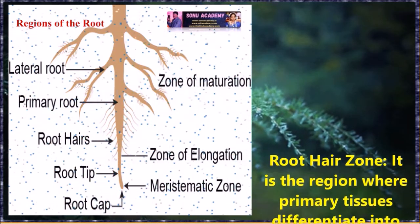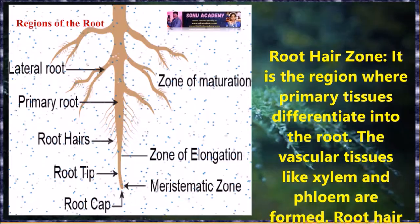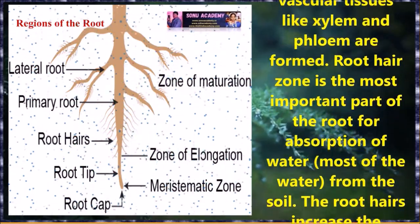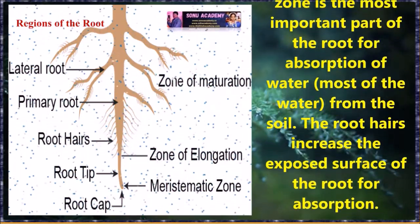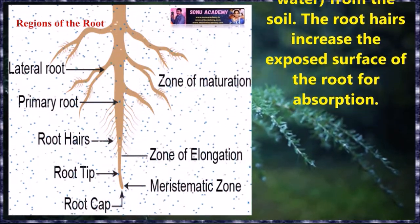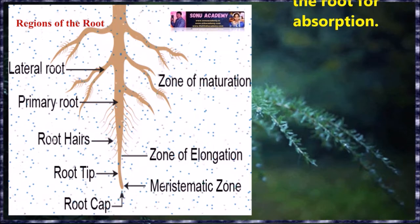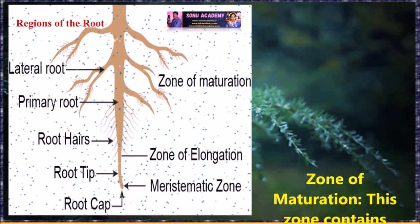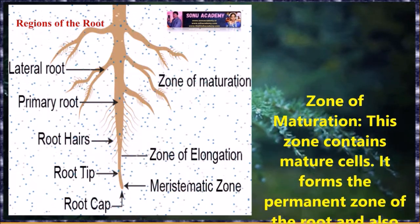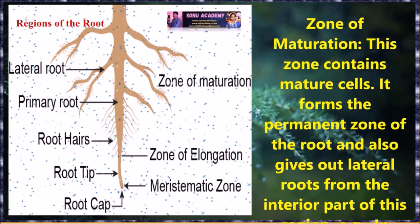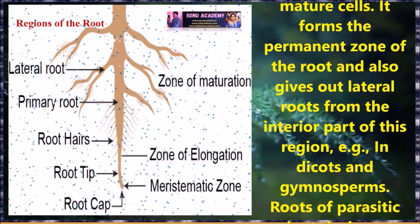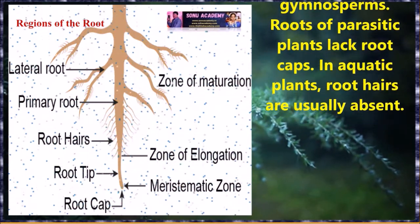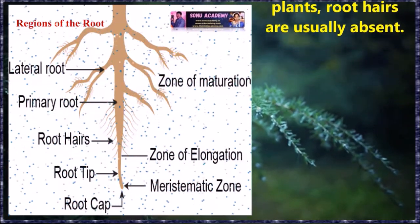The fourth one is the root hair zone. It is the region where primary tissues differentiate into the root. The vascular tissues like xylem and phloem are formed in this region. The root hair zone is the most important part of the root for absorption of water from the soil. Root hairs increase the exposed surface of the roots for absorption. The fifth is the zone of maturation. This zone contains mature cells and forms the permanent zone of the root; it also gives out lateral roots from the interior part of this region. In dicots and gymnosperms, the roots of parasitic plants lack root caps. In aquatic plants, root hairs are usually absent.